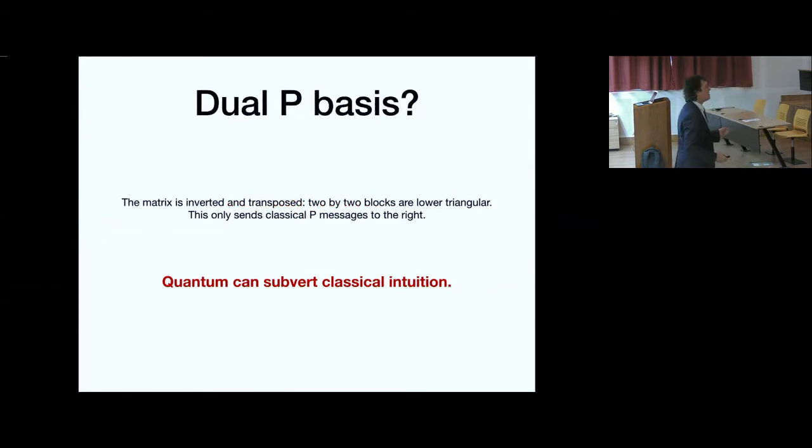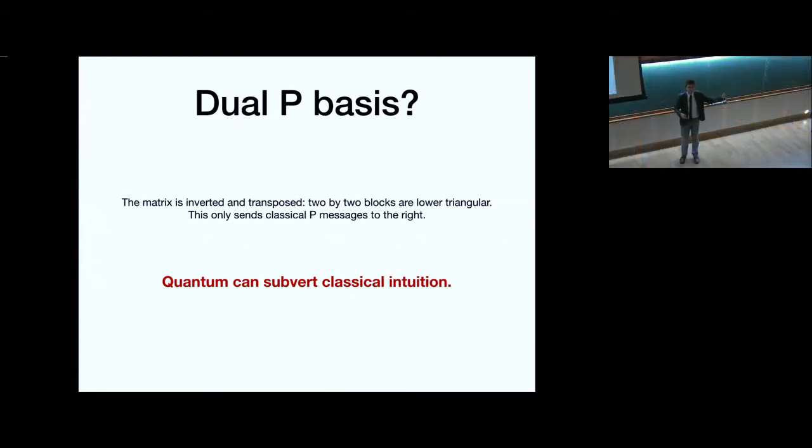But it's quantum mechanics. So there's also the dual P basis. In the dual P basis, the matrices are inverse, transposed, so they're lower triangular. So the P basis only sends messages to the right. So the quantum can subvert a classical intuition. So instead of sending messages to the left, as one would be naively inclined, you can end up sending messages to the right in the P basis. So if you initialize everything in the P basis and do something random in the first few things on the left, you can send messages to the right.